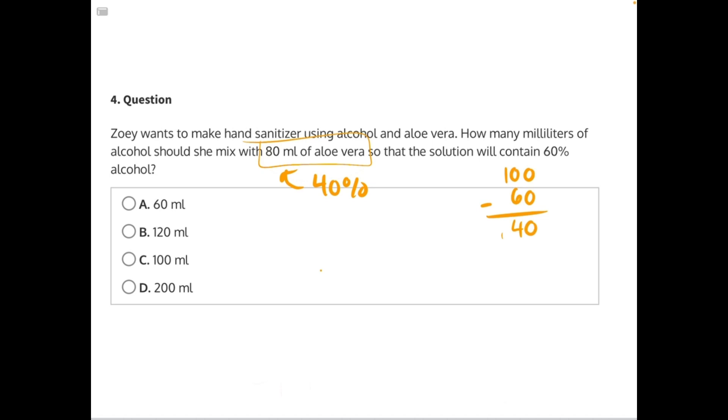If we can use this information to figure out how many milliliters is equal to 1% of the solution, then we could simply multiply that number by 60 to find our answer, because that is 60% of the solution.